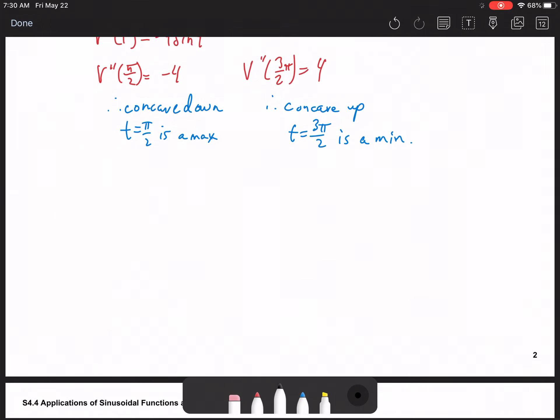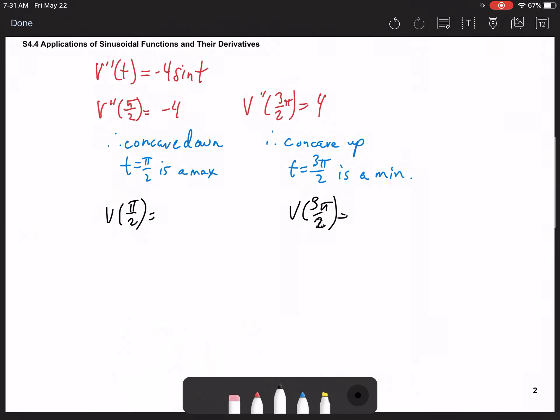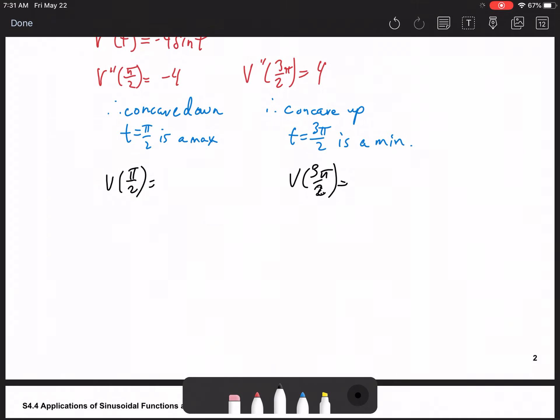All we need to do now is we need to actually find the maximum and minimum voltages, so that requires us to just substitute it in. Now we're substituting π/2 into our original function, and we're substituting 3π/2 into our original function. Again, you can just use the calculator to work this out, which I'm going to do. This turns out to be 13, and the minimum voltage turns out to be 5.